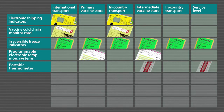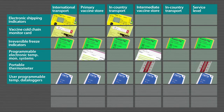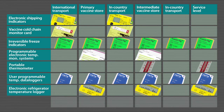Portable thermometers may be used at all levels of the cold chain. However, they are not recommended as the primary source of information because they only provide a snapshot of temperature at the time when you look at them. User-programmable temperature data loggers may be used at all levels of the cold chain, but only for study purposes — not for routine temperature monitoring, because you have to download the data to see what has happened. A WHO-recommended refrigerator electronic temperature logger is used to monitor temperatures in vaccine refrigerators, especially at the health service level, and may also be used as a backup device in storage facilities such as intermediate or primary vaccine stores.